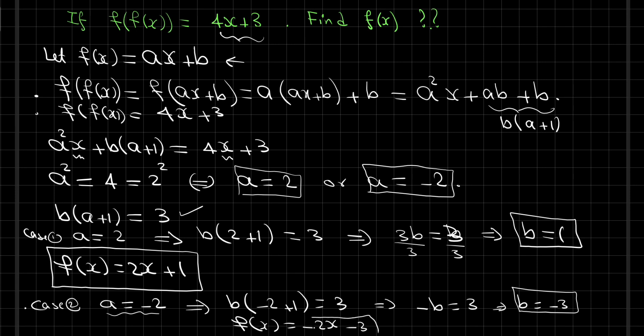We have two possible solutions for f of x. The first possible solution is 2x plus 1, and the second is f of x equals negative 2x minus 3, and both of them are correct.